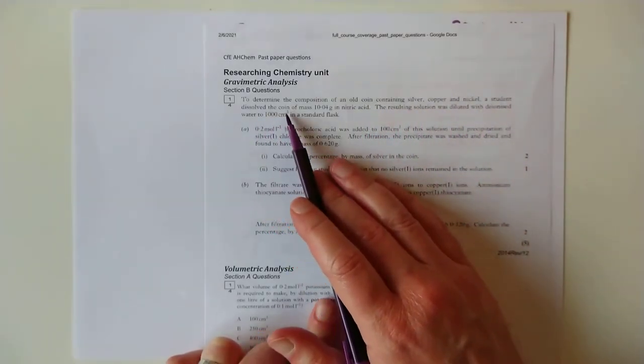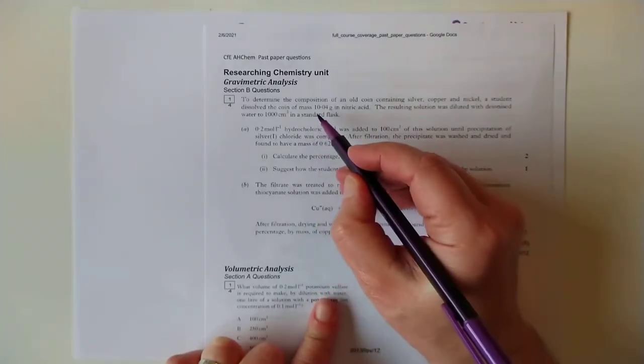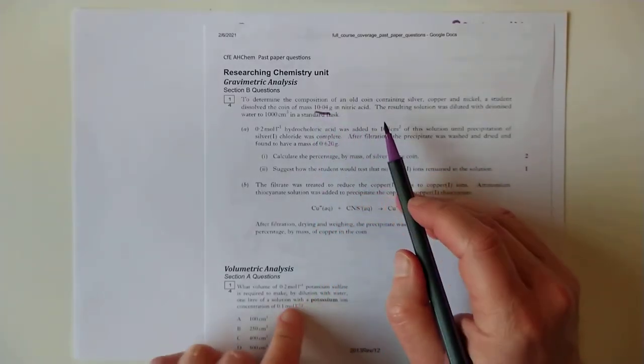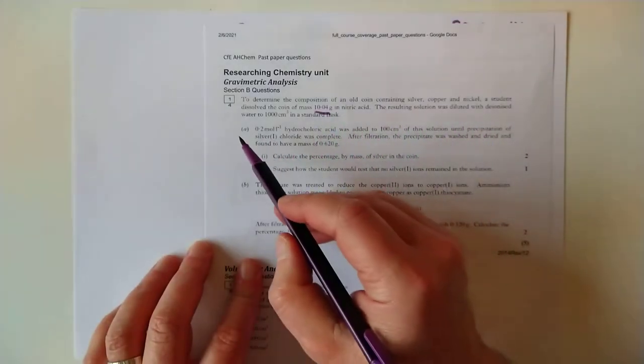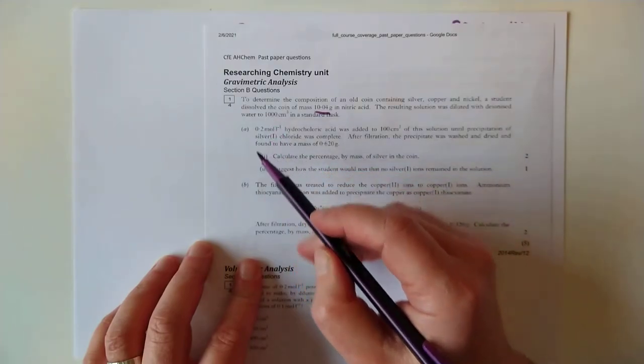So let's have a look. What have we got? To determine the composition of an old coin containing blah, blah, blah, a student dissolved the coin, and that was the mass of the coin, 10.04,